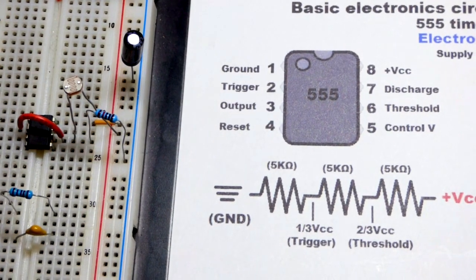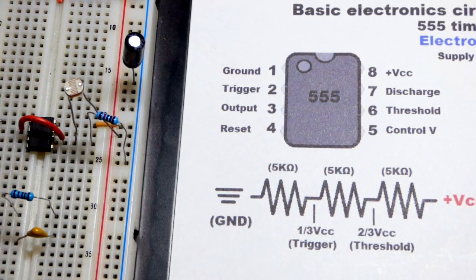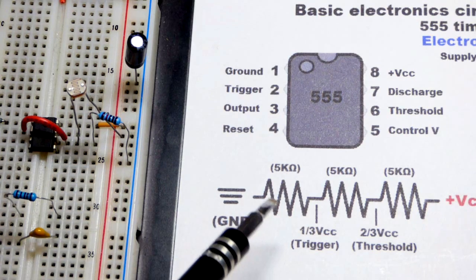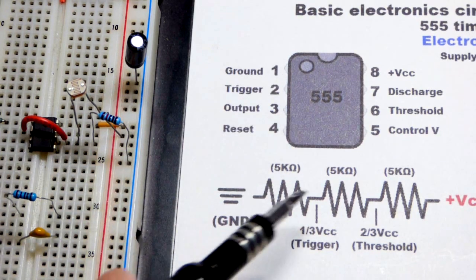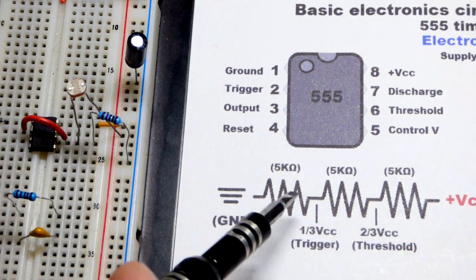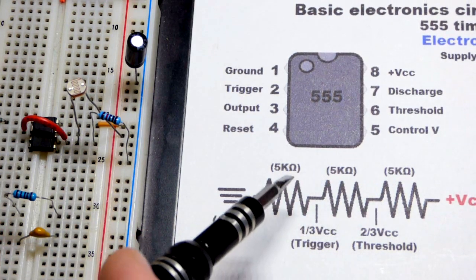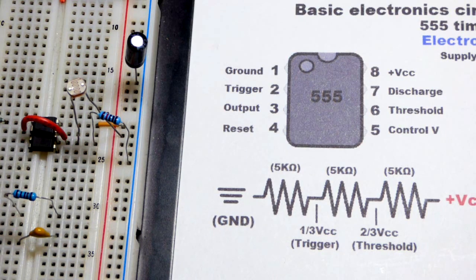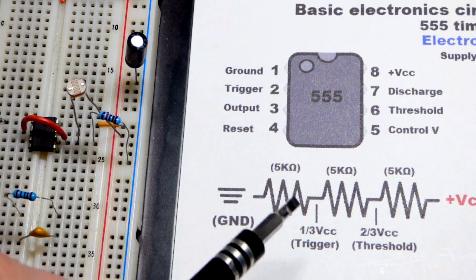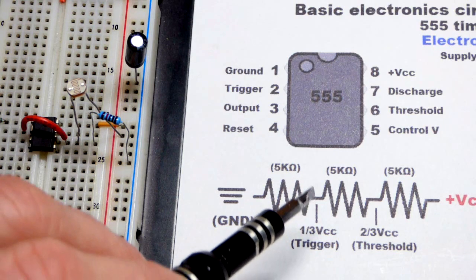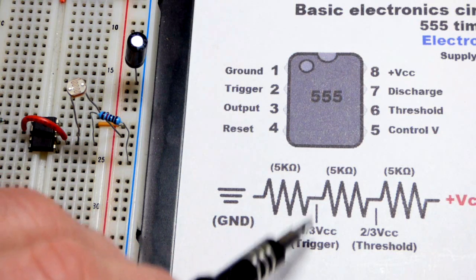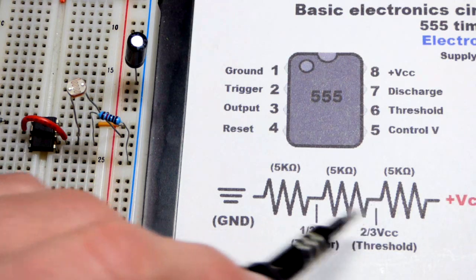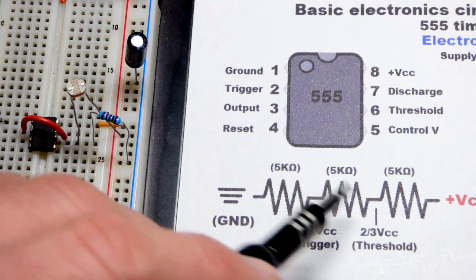We already saw pin 2 and pin 6 are tied together. Within the 555 timer, there's a fixed voltage divider. They might be 5 kilohm resistors, but the main thing is they are equal value resistors. As long as you don't draw a load from them, you'll have one-third voltage and then two-thirds voltage across the resistor in the middle.